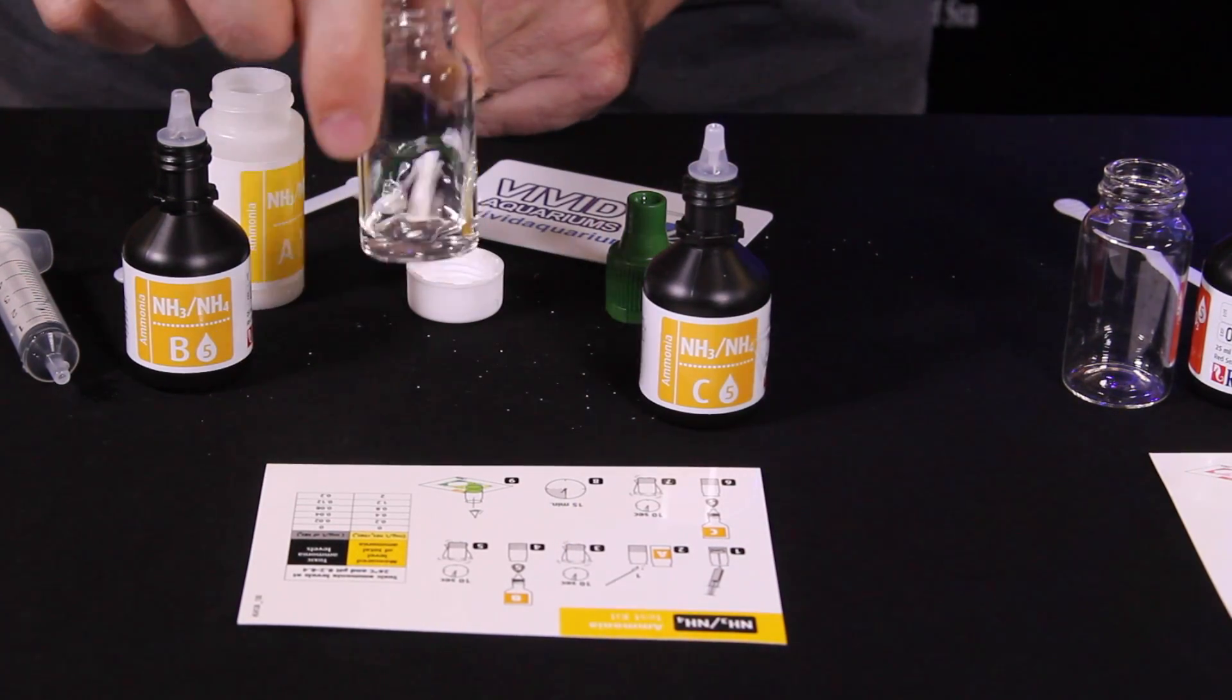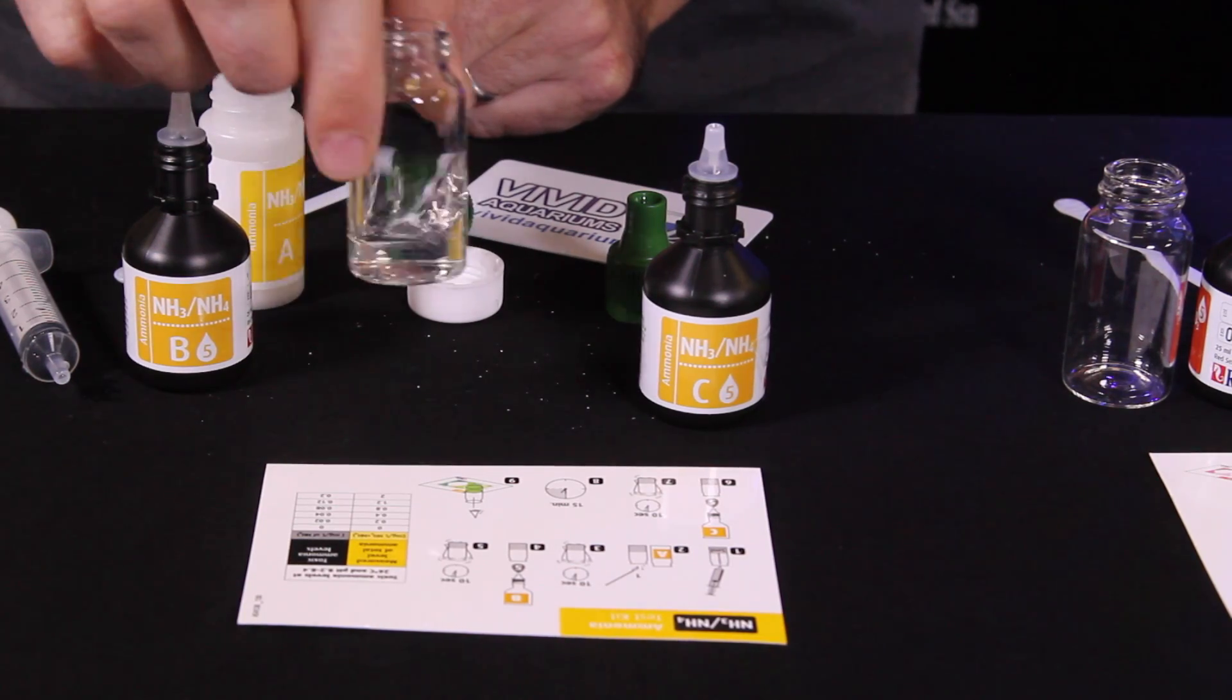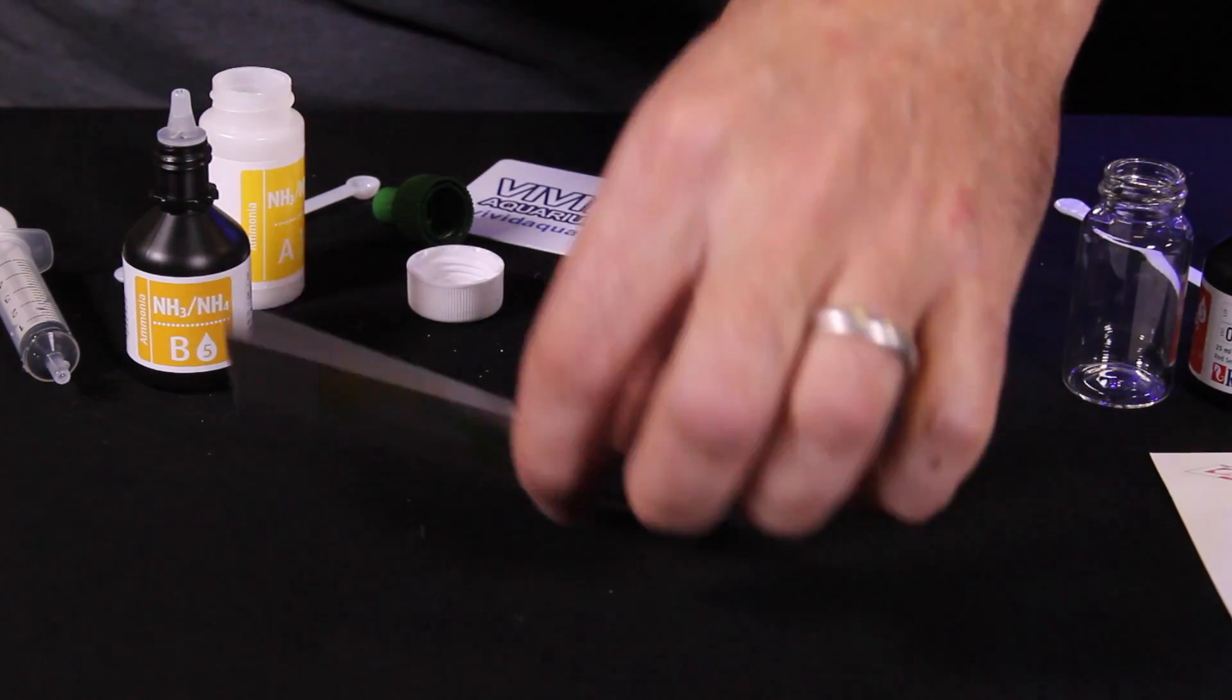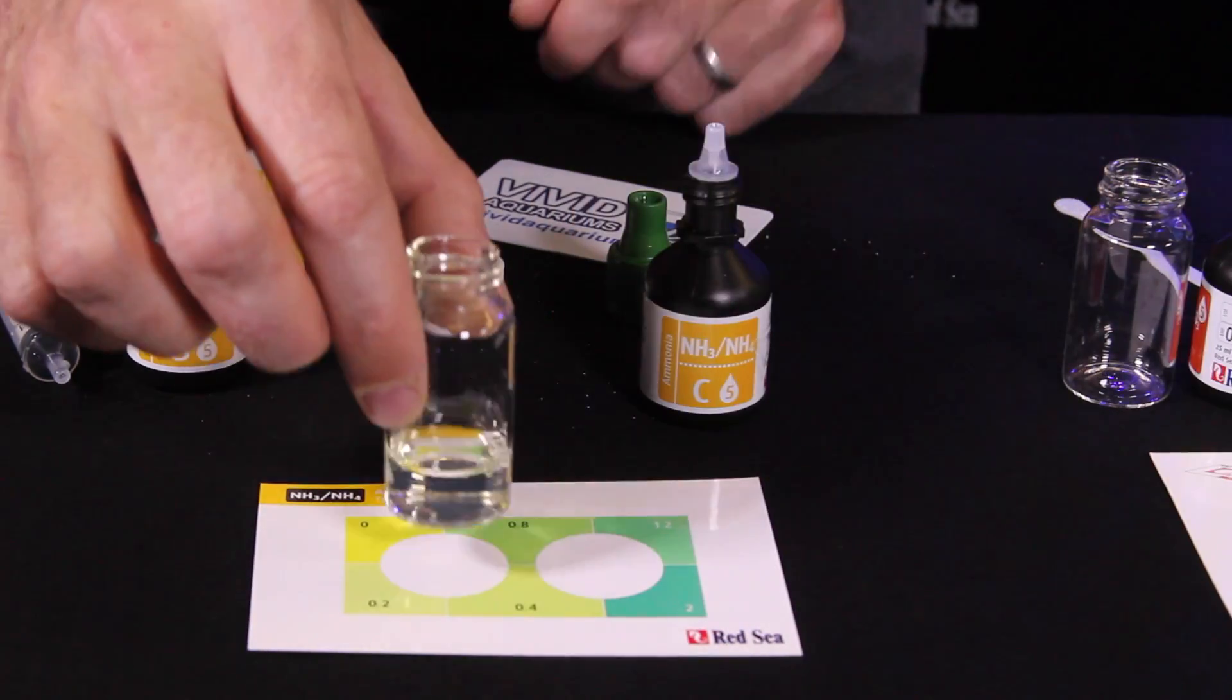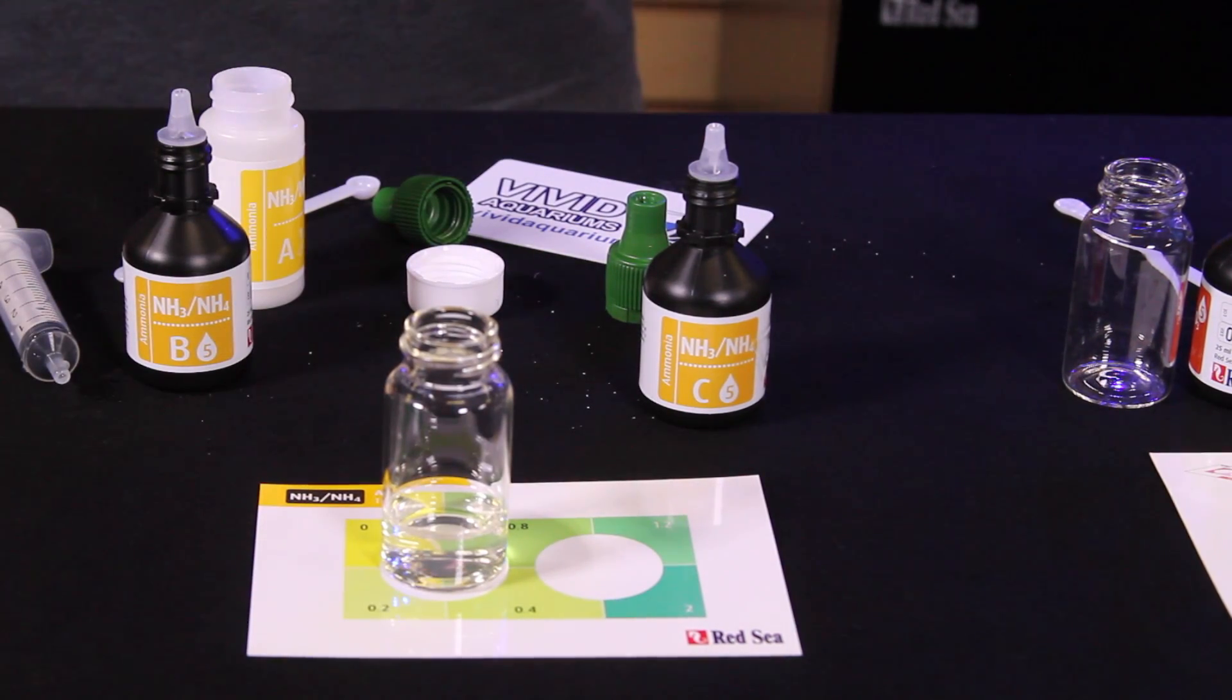Now we need to swirl again for 10 seconds. And then we need to wait 15 minutes to take our test results. So what I'm going to do is turn the card over. I'll set the test vial there on the color comparison chart, and we'll come back and check our results in a few minutes.